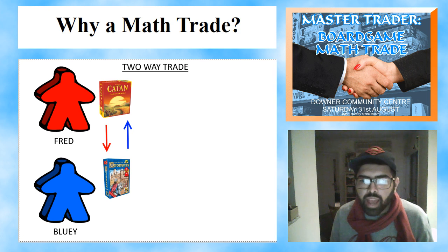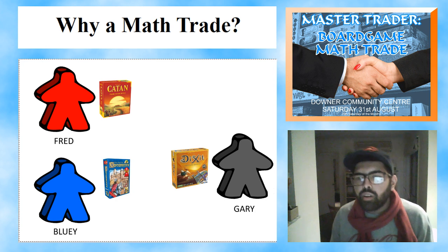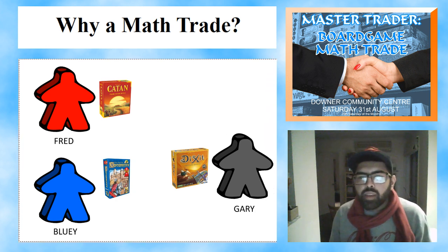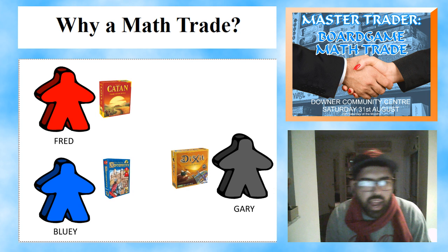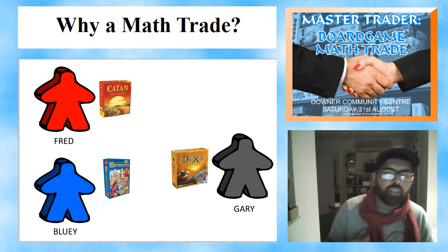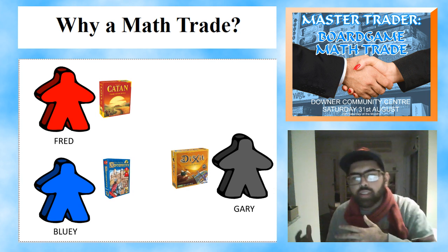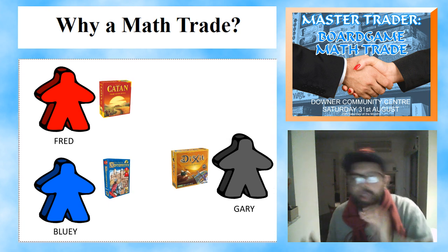Say we have Gary — he also has Dixit. Maybe we can get a situation where you have a trade cycle. Fred might still want Cocks On, but if Blue doesn't want Catan, he might want Dixit.